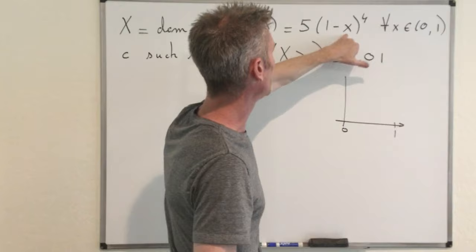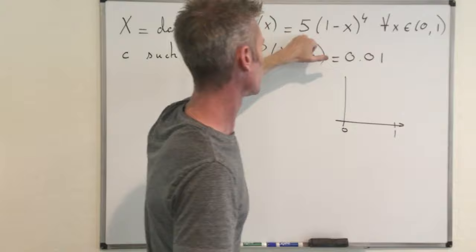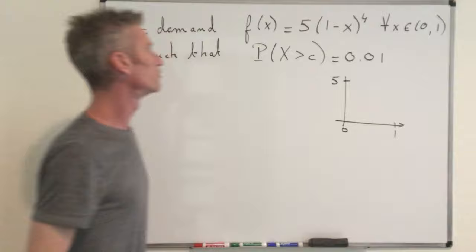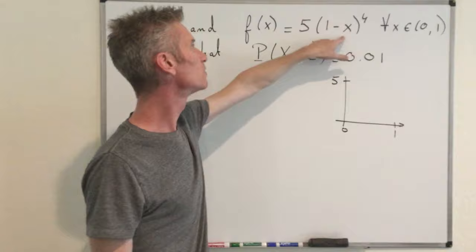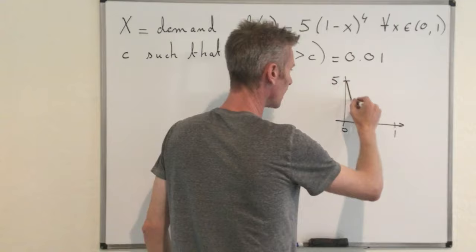And I'm drawing this function for X equals 0. Here you obtain just 1 times 5, so that's a 5. Okay, that's the value of f of 0. Then clearly this function is going to decrease. For X equals 1, that's 0. So here we are at 0. And so our function kind of looks like this. Okay, so that's the demand in gasoline that looks like this.